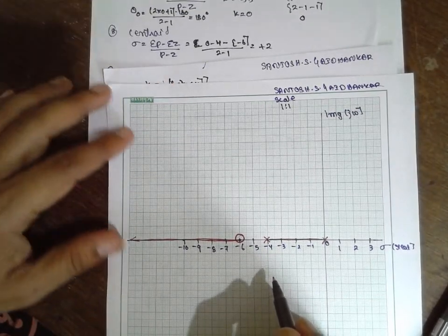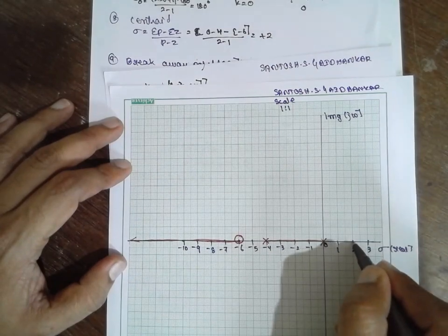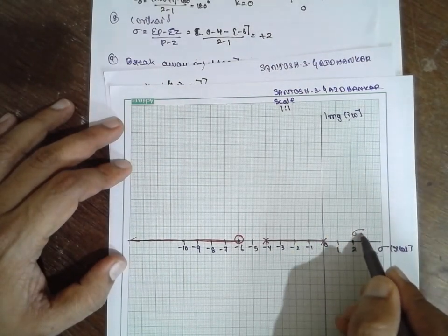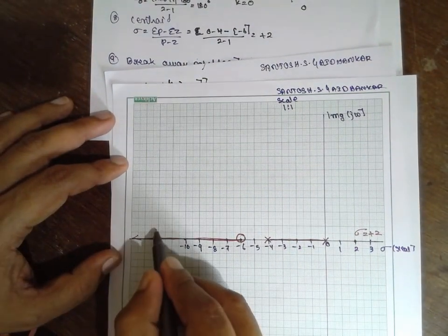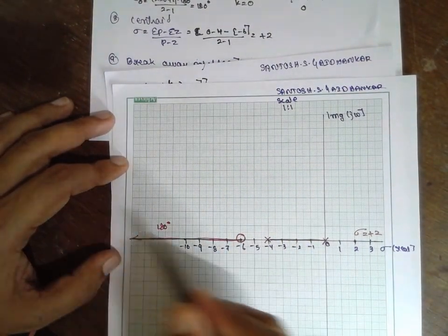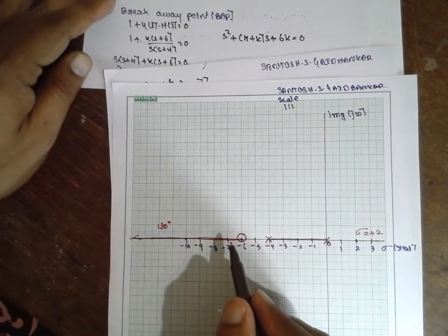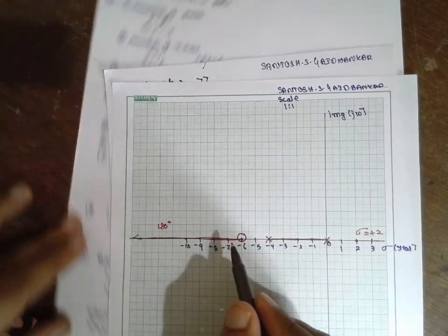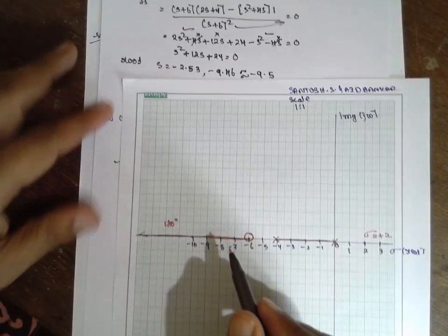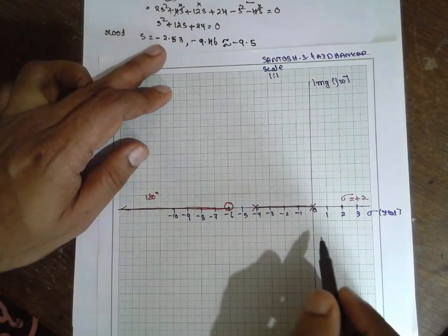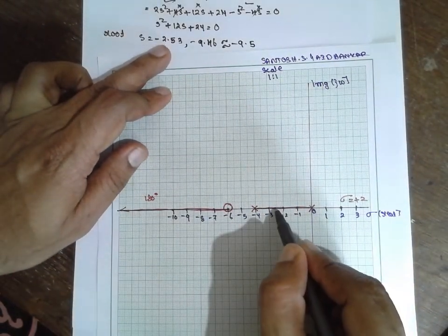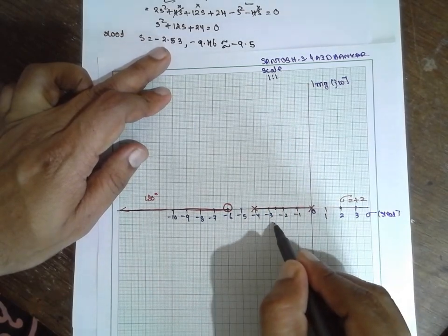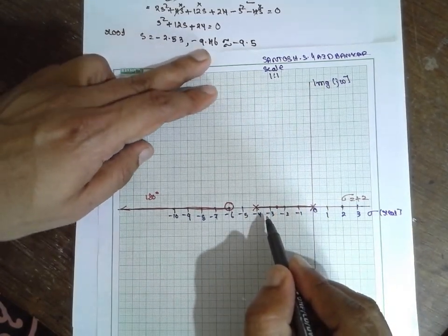Next, centroid. Centroid is plus 2. Centroid line here: sigma equals plus 2. What about angle? Angle is 180. This edge, 180 degrees. Roots - if you think about the root, there are two roots: minus 2.53, approximately here, and next is about 9.5, which is here. Both are in the root locus.